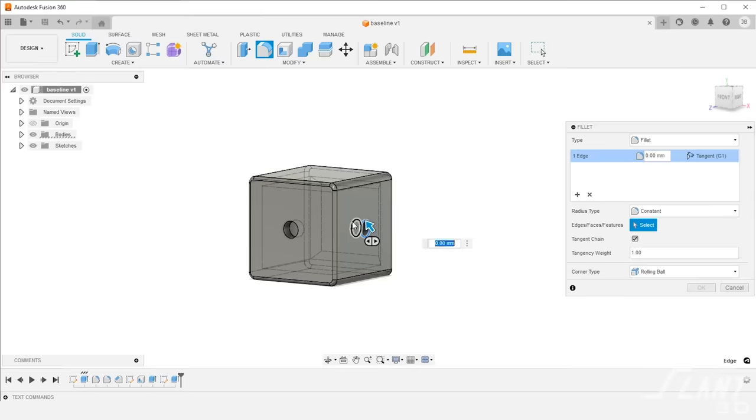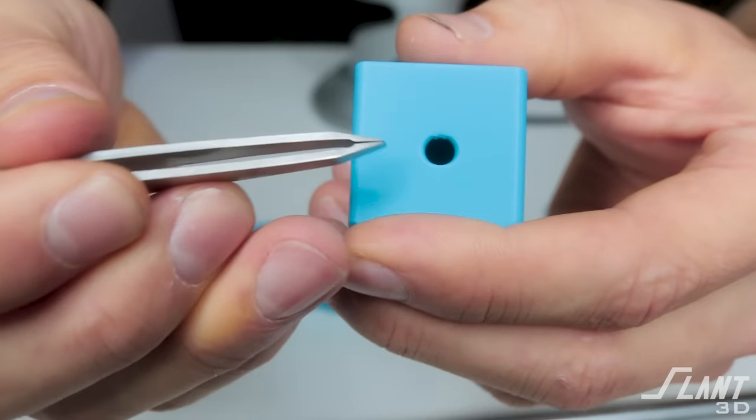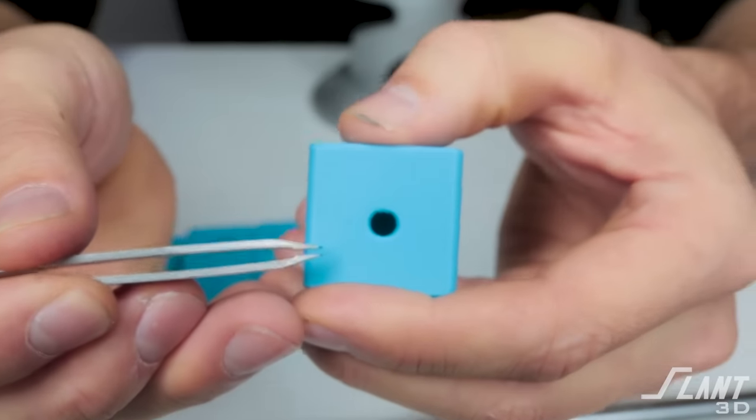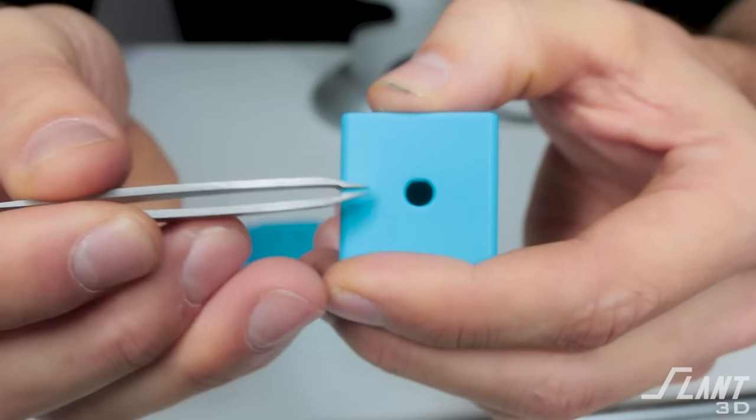The correct way to do it is to add some small fillets around the hole. This rounds the outer edges and gives the tool path a smoother motion so it's able to create a much cleaner hole.